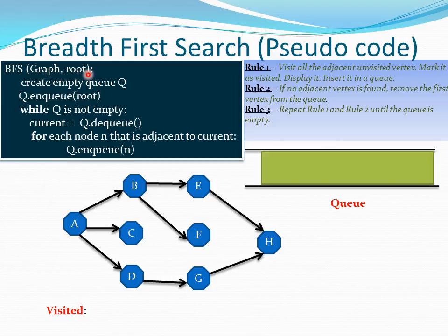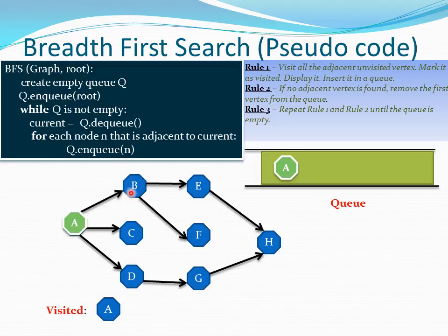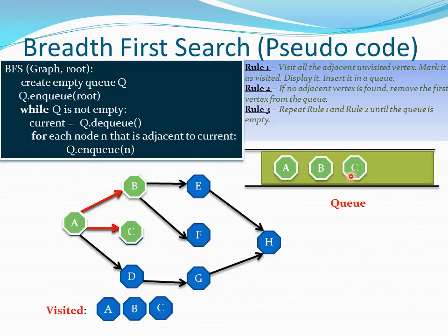Now let us visualize this. We pass the root node — let us choose A as our root node. We create an empty queue and enqueue A. In our while loop the queue has A. We set current equal to dequeue, so we are processing A. For each node N adjacent to current: A's adjacents are B, C, and D. We go through them one by one and enqueue them, so we enqueue B, then C, then D.